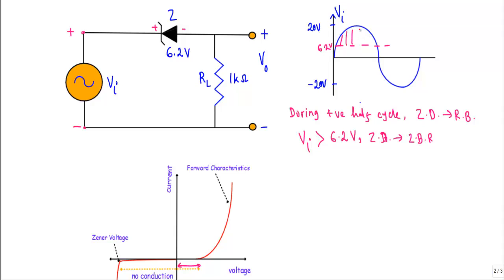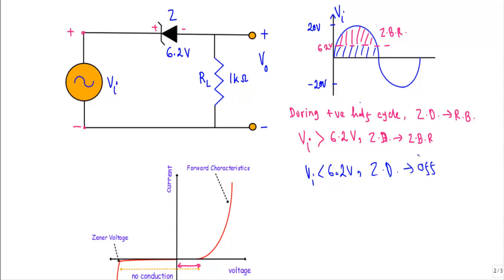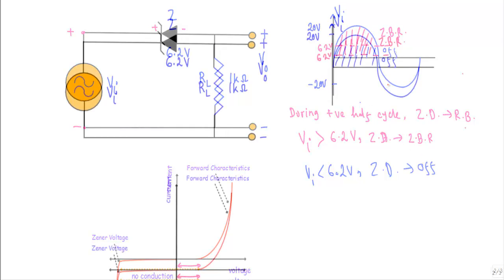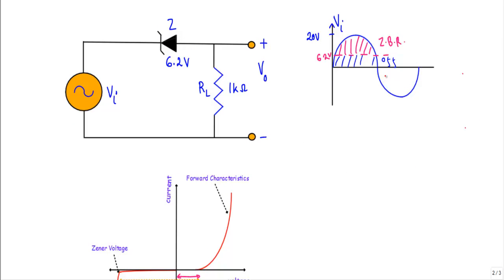This region indicates Vi greater than 6.2V, where the Zener diode operates in the Zener breakdown region and acts as a voltage regulator. When Vi is less than 6.2V, the Zener diode is in reverse bias but will not operate in the breakdown region — it will be in the non-conducting or off state.